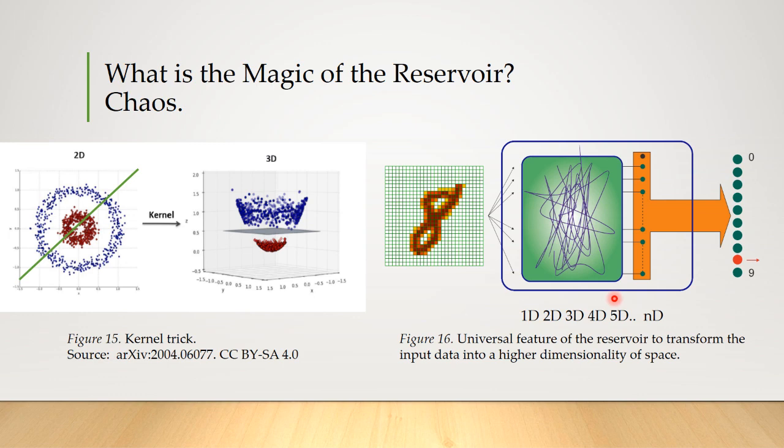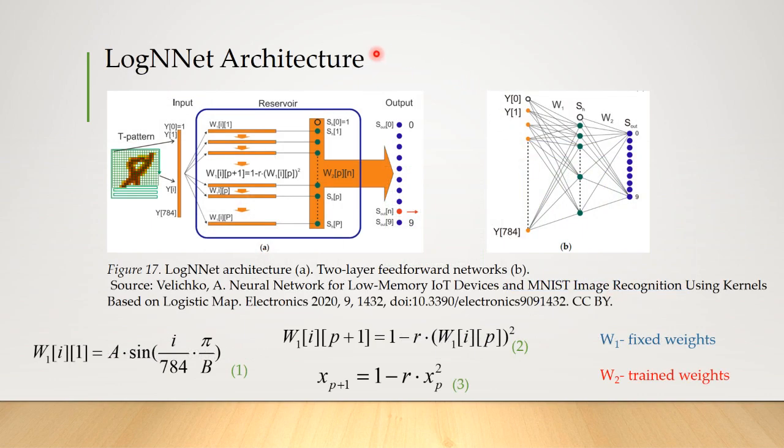And as research results demonstrated, reservoirs with the borderline behavior between order and total chaos are best suited for neural networks. The network architecture proposed by me, called LogNNet, is shown in the figure.